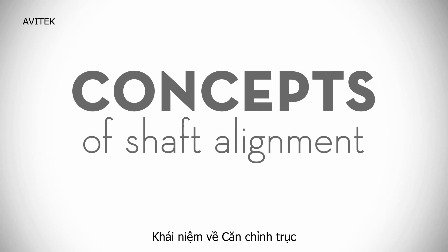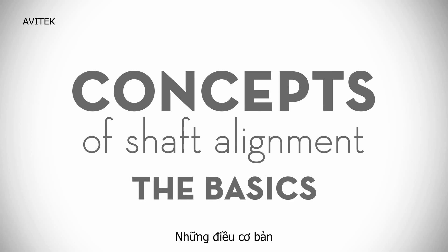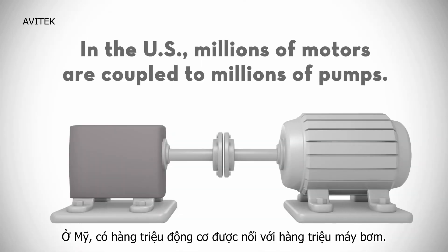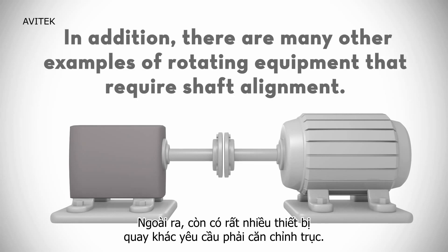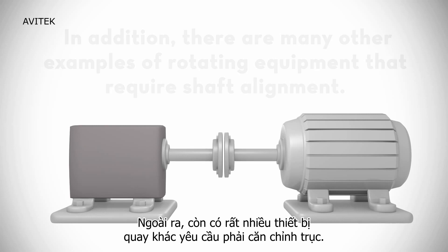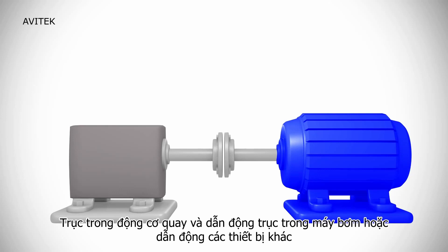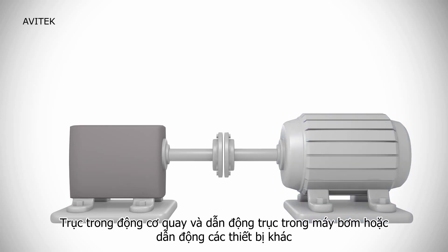Concepts of Shaft Alignment: The Basics. In the U.S., millions of motors are coupled to millions of pumps. In addition, there are many other examples of rotating equipment that require shaft alignment. The shaft in the motor or engine rotates and drives the shaft in the pump or other driven machine.